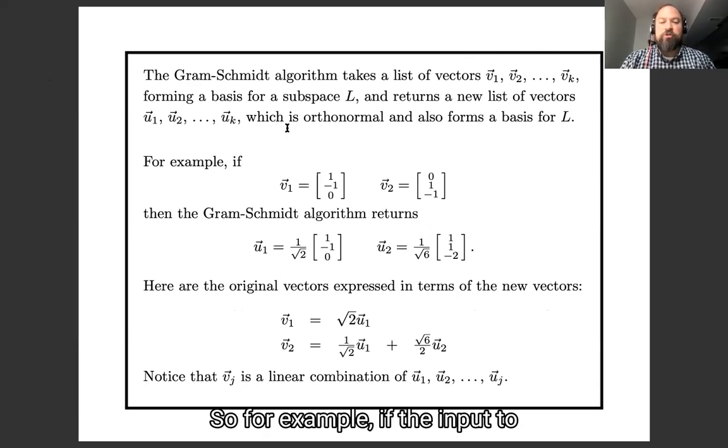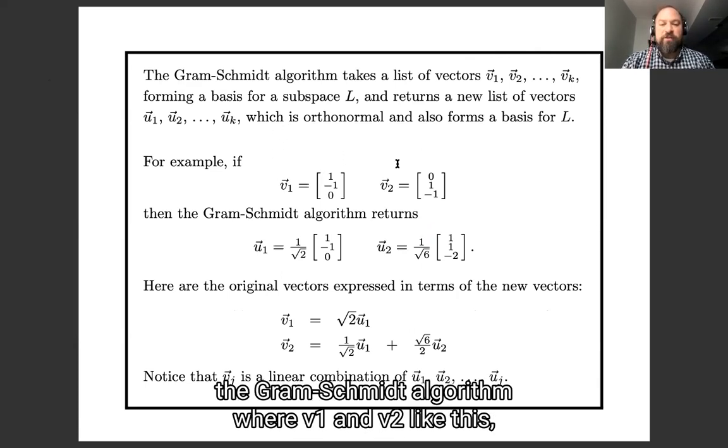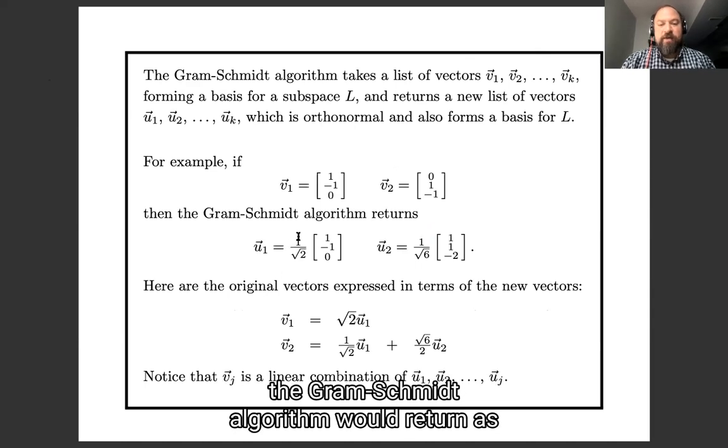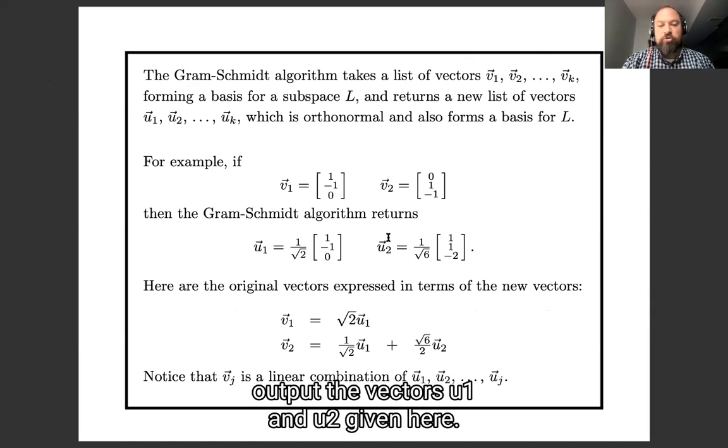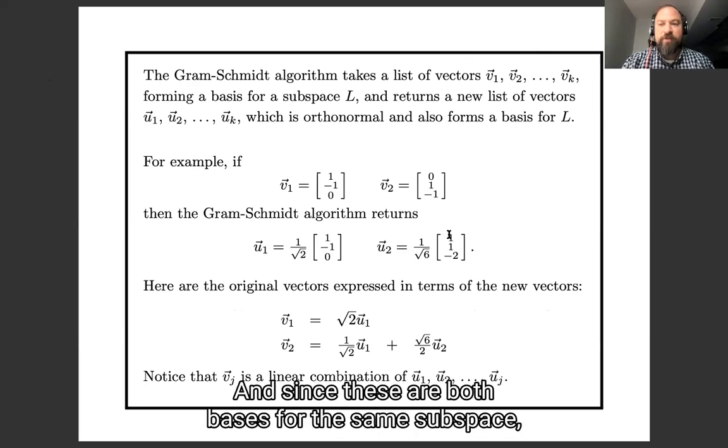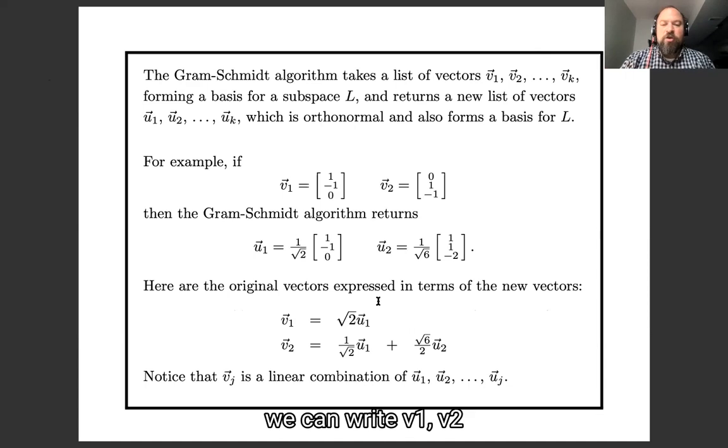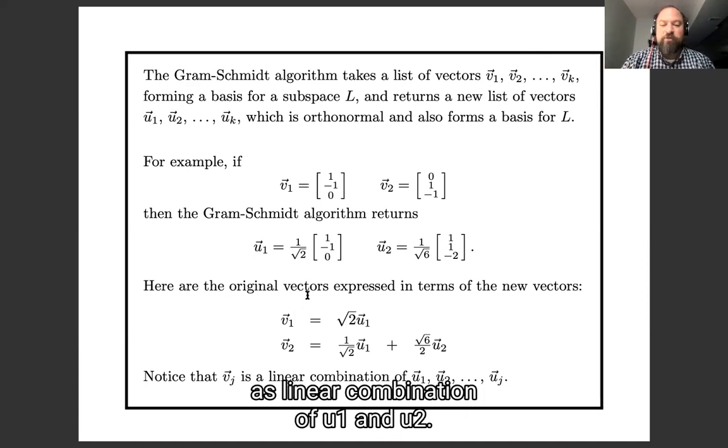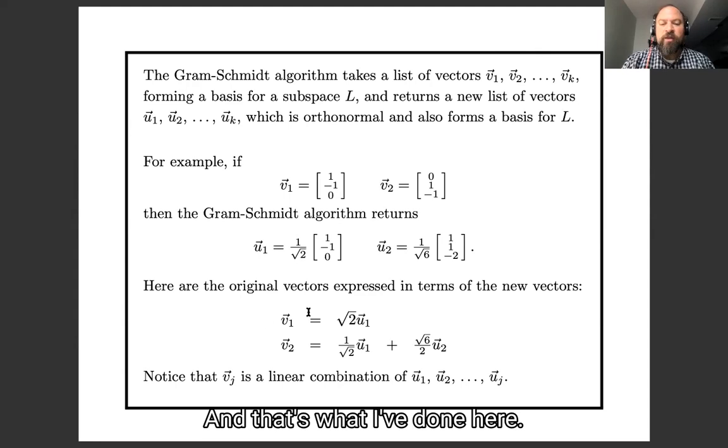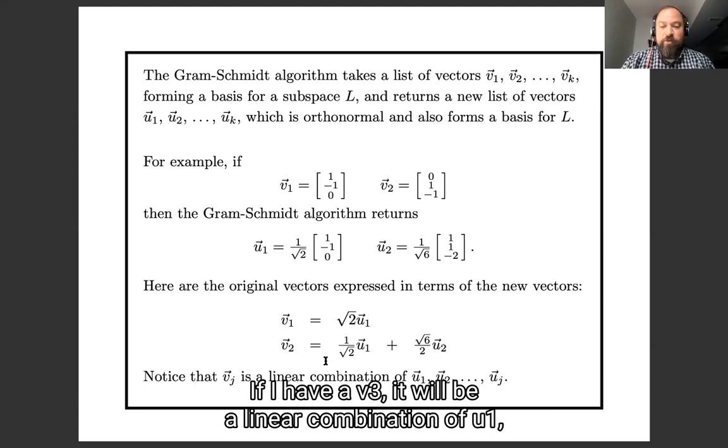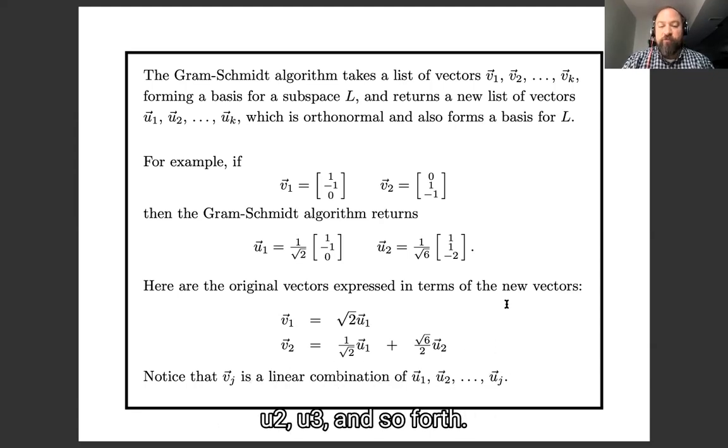So for example, if the input to the Gram-Schmidt algorithm were v1 and v2, like this, the Gram-Schmidt algorithm would return as output the vectors u1 and u2 given here. And since these are both bases for the same subspace, we can write v1 and v2 as a linear combination of u1 and u2. And that's what I've done here. Notice that v1 is a multiple of u1, v2 is a linear combination of u1 and u2. If I had a v3, it would be a linear combination of u1, u2, and u3, and so forth.